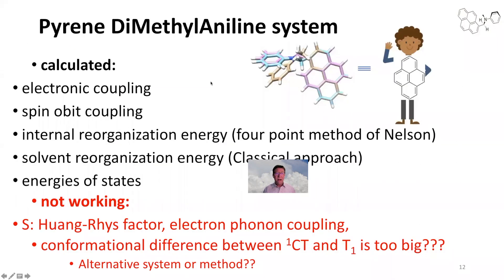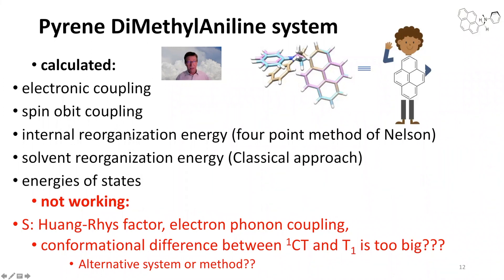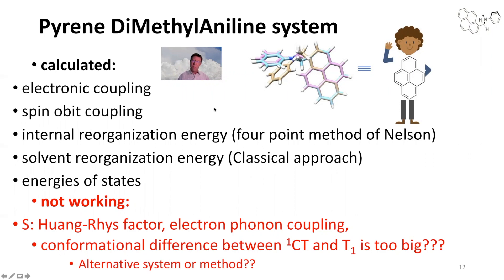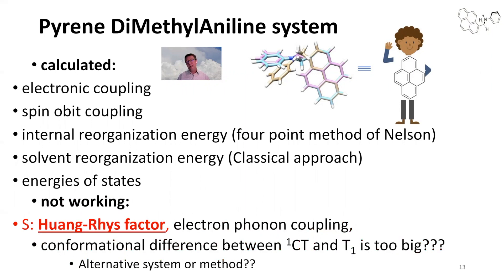We were able to calculate electronic coupling, spin-orbit coupling, and internal reorganization energy using the four-point method. The solvent reorganization energy was treated classically. However, one thing was not working: the Huang-Rhys factor — the values we obtained were very, very low, which doesn't make much sense. This is the electron-phonon coupling, the vibronic coupling, and it is an important property we really would like to probe if we want to understand charge generation.